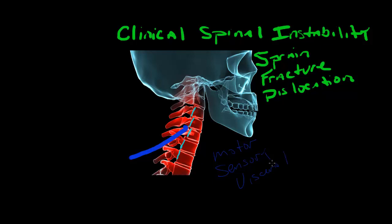Motor is obviously the movement of anything. Sensory is the sensory system so the body can sense what it needs, where each part is — very important to the body. Visceral relates to all the body's organs. Now when we have excessive abnormal motion, which is what we normally have with spinal instability, this area becomes very inflamed. If that inflammation or the actual position of the vertebra compresses upon the spine, we have decreased spinal nerve transmissions — both motor transmissions going out and sensory transmissions coming in.